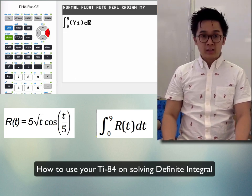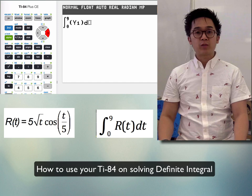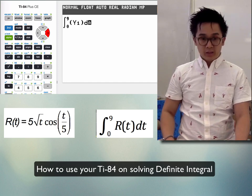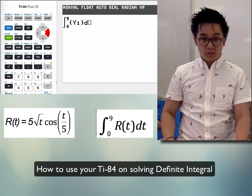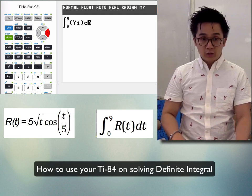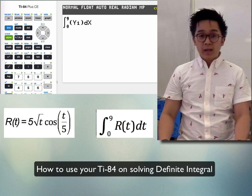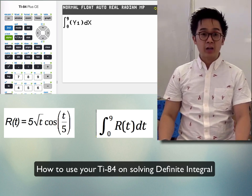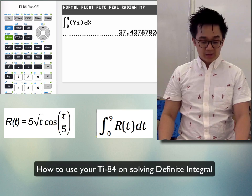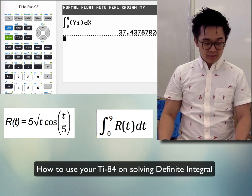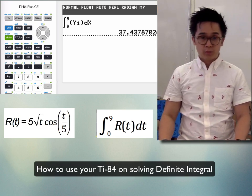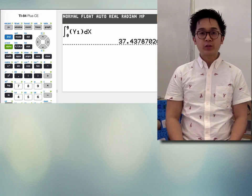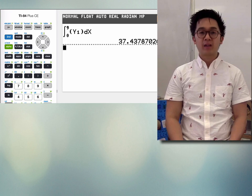We are using our calculator to compute the integral of r(t) from 0 to 9. Don't forget to push X for dx and push Enter. It will compute the definite integral from 0 to 9 of the given function, and in this case it gives us 37.437.